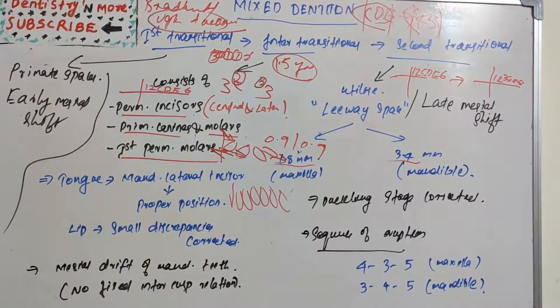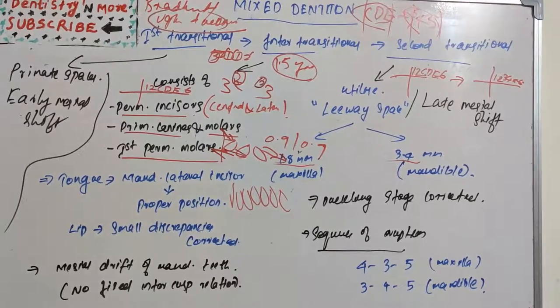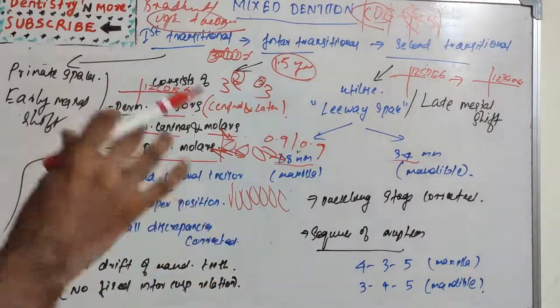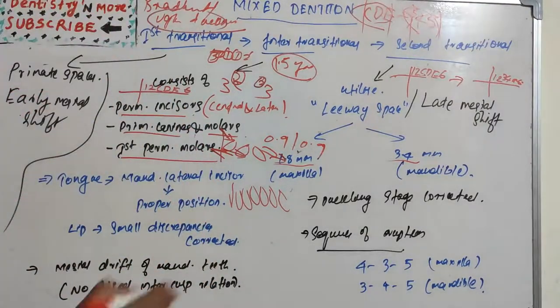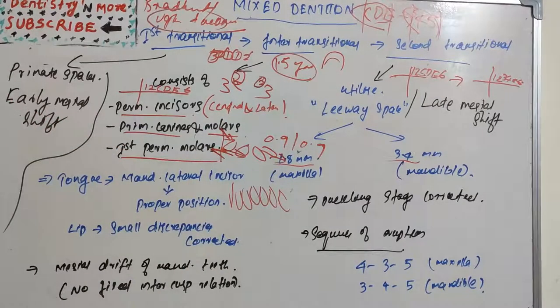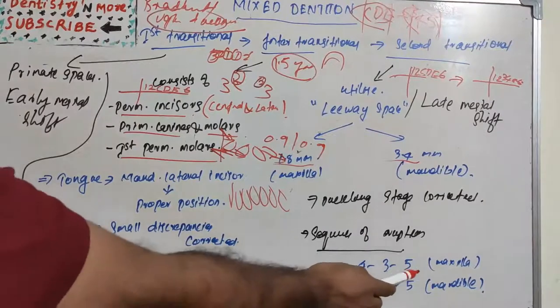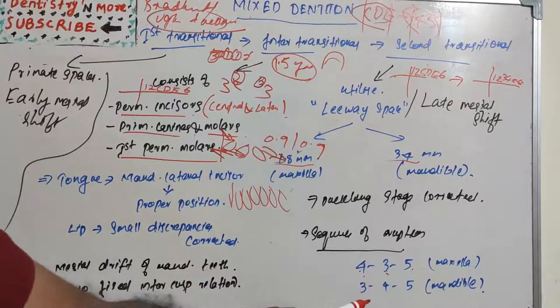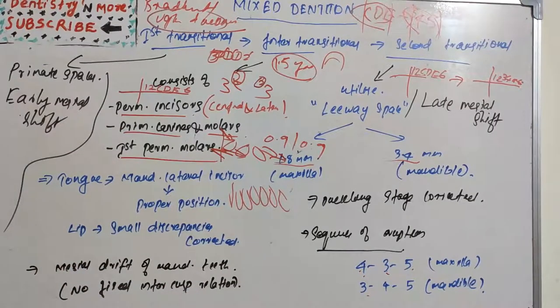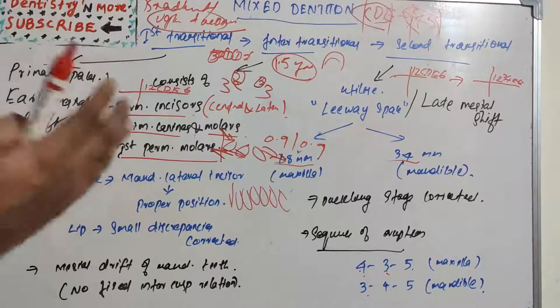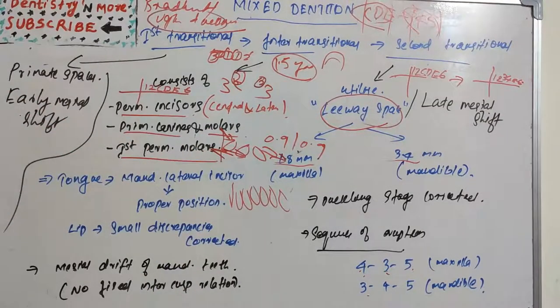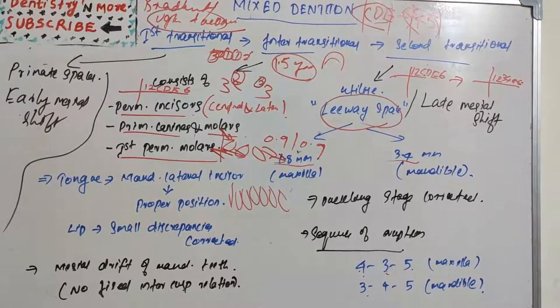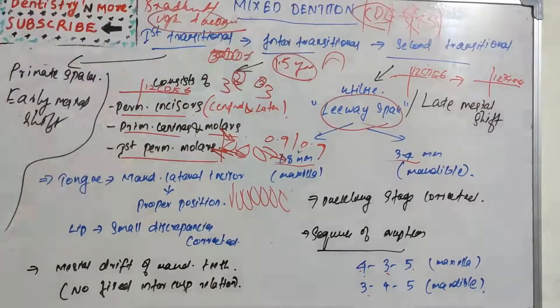So the correction of Broadbent phenomenon or ugly duckling stage happens during the second transitional period. Also, this arch loses its roundness - we know the gum pads and deciduous arch are more of a rounded appearance. The most common sequence of eruption is four, three, five in maxilla - first premolar, canine, and second premolar - whereas mandible is three, four, five - canine, first premolar, and second premolar. This sequence is essential to prevent crowding and utilize the leeway space. The dental arch length and arch circumference decrease with the mesial force.